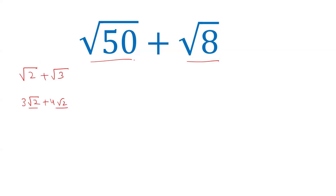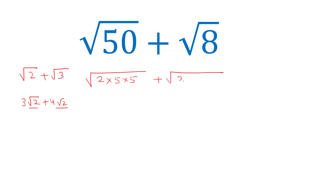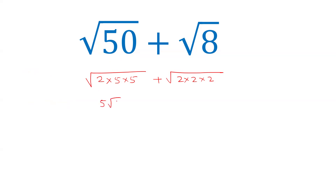So, first of all, we need to convert these two numbers into like surds. Let's factorize: 50 can be written as 2 into 5 into 5, and 8 can be written as 2 into 2 into 2. Now, after this, the number 2 into 5 into 5 inside the square root can be written as 5 root 2, because 5 into 5 is 25 and under root 25 is 5.